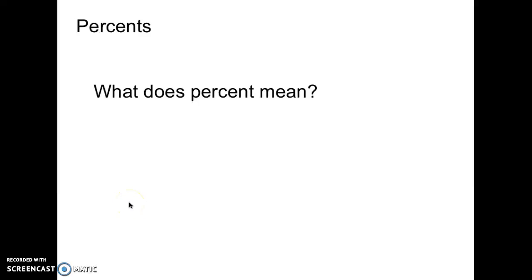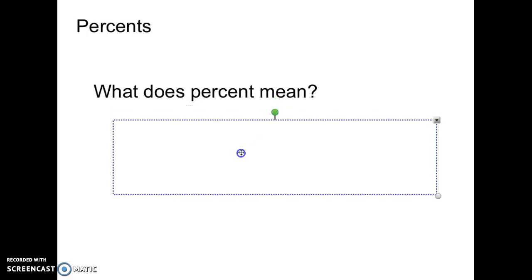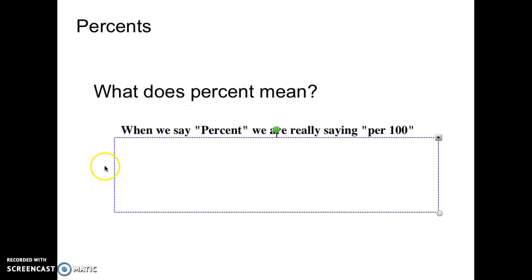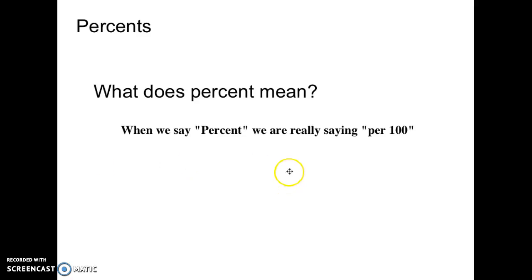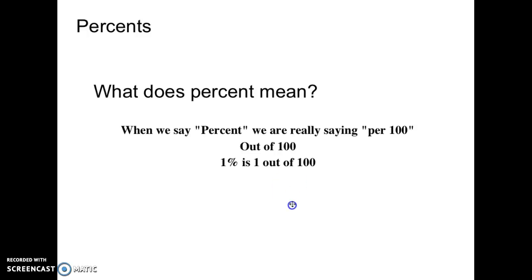We're going to talk about percents today. Let's think about what a percent means. Percent literally means per 100, so everything a percent is, it's over 100. If I have 50 out of 100, I have 50%. All percents are out of 100, so one percent is one out of a hundred. Take a second now and add that into your math notebook: percent means per 100, out of 100.